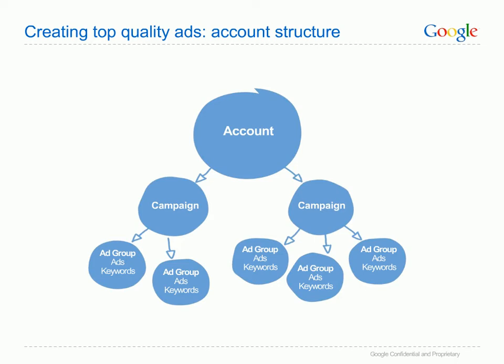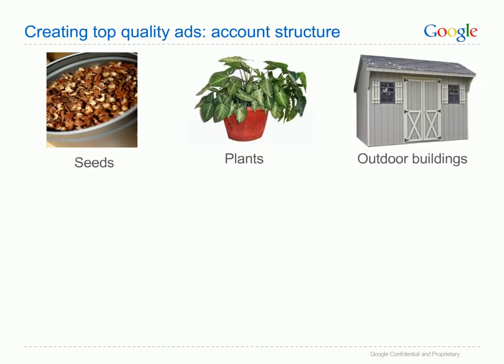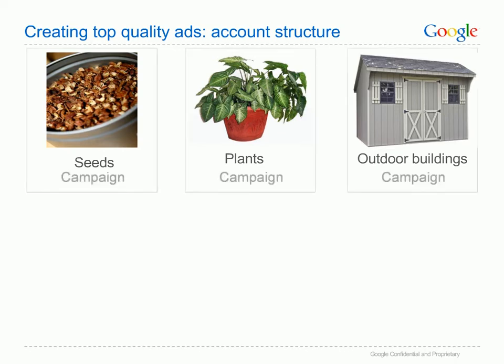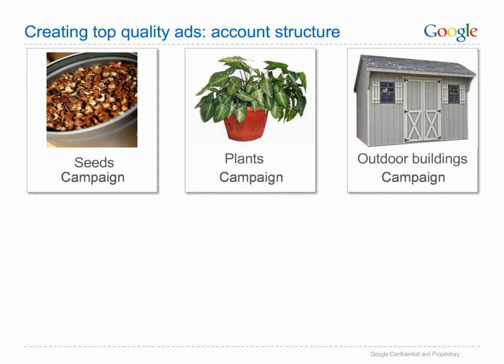If you sell multiple products on your site, you should think about splitting out each product area into a separate ad group. If your site is more complex, you can create new campaigns for each larger theme or goal and then split each campaign into more specific ad groups. It's often a good idea to look at your website structure to help you structure your AdWords account. For example, this garden centre site has three sections – seeds, plants and outdoor buildings. If you were advertising this site, you could create a new campaign for each of these sections, which will allow you to have a separate budget for each area.